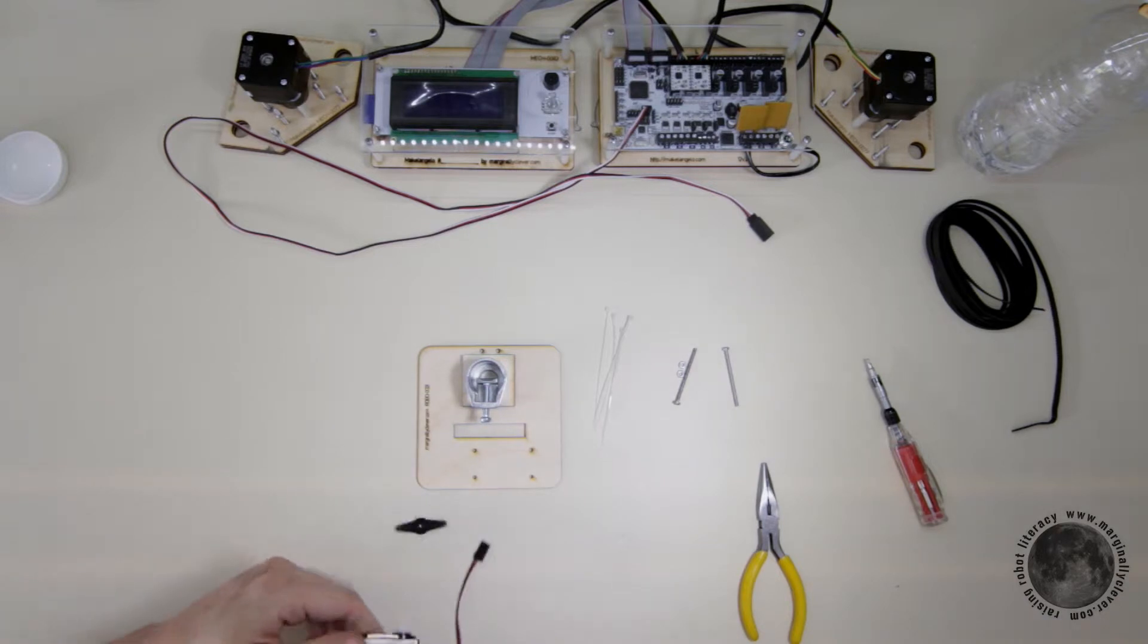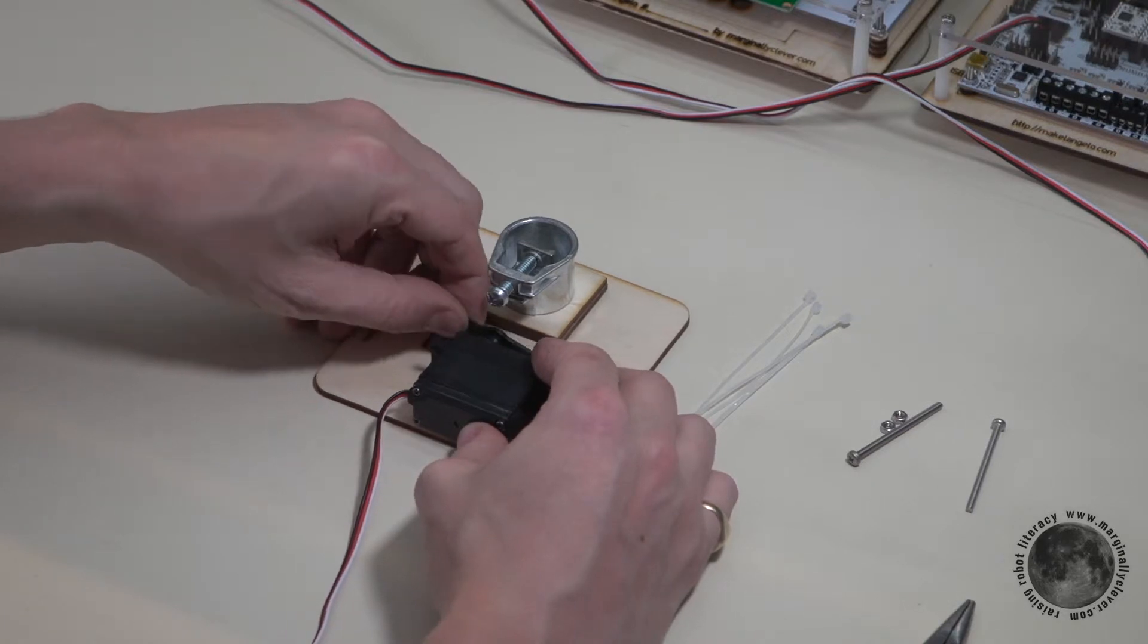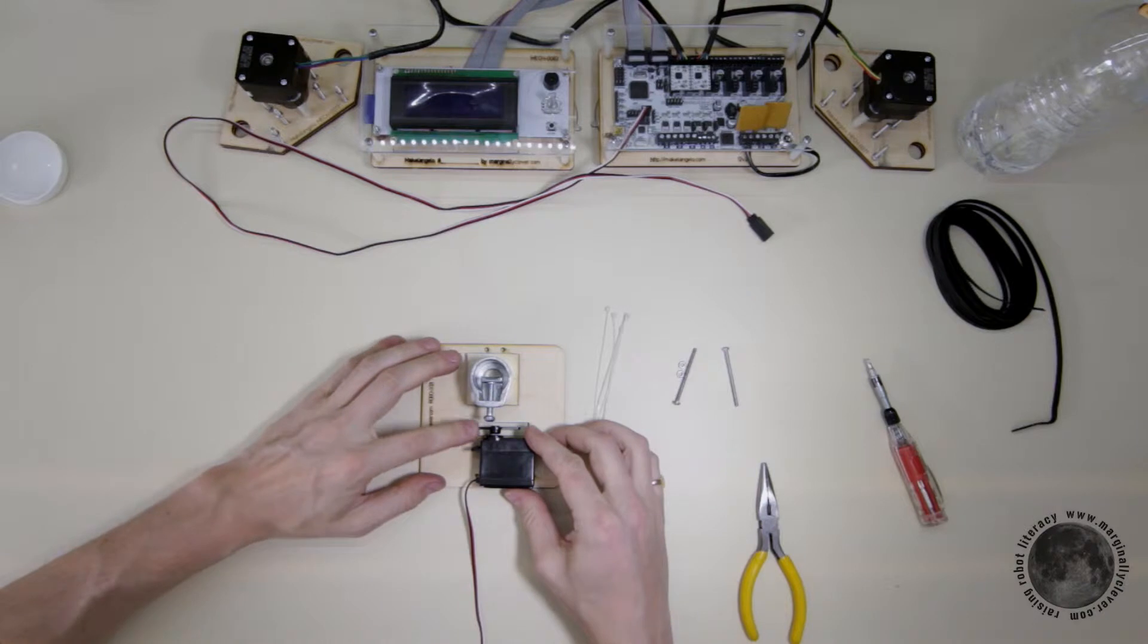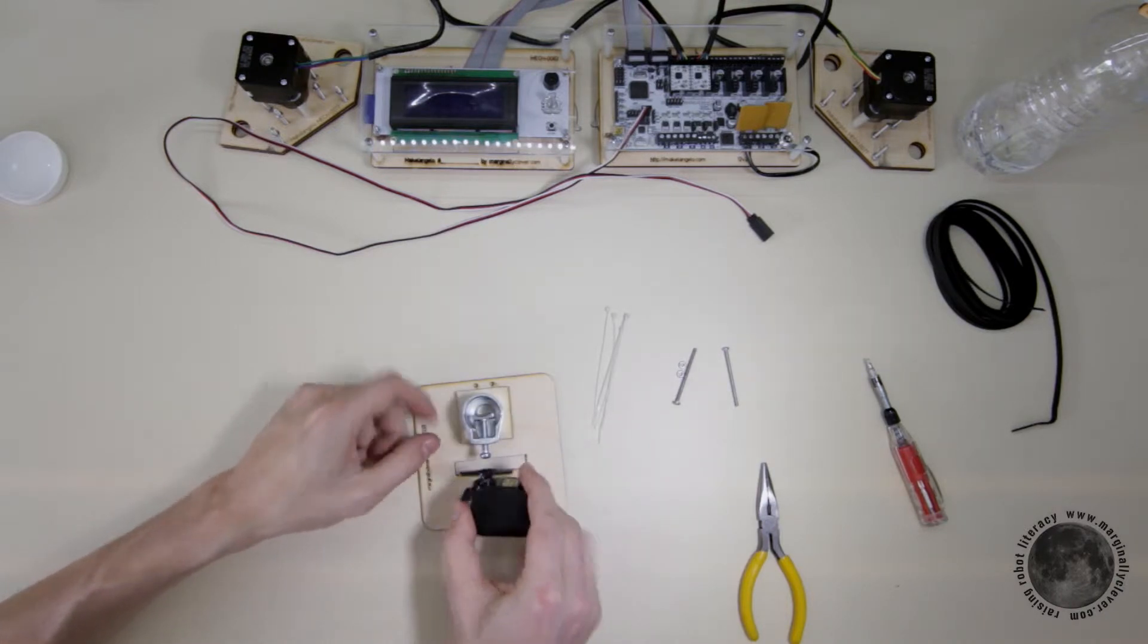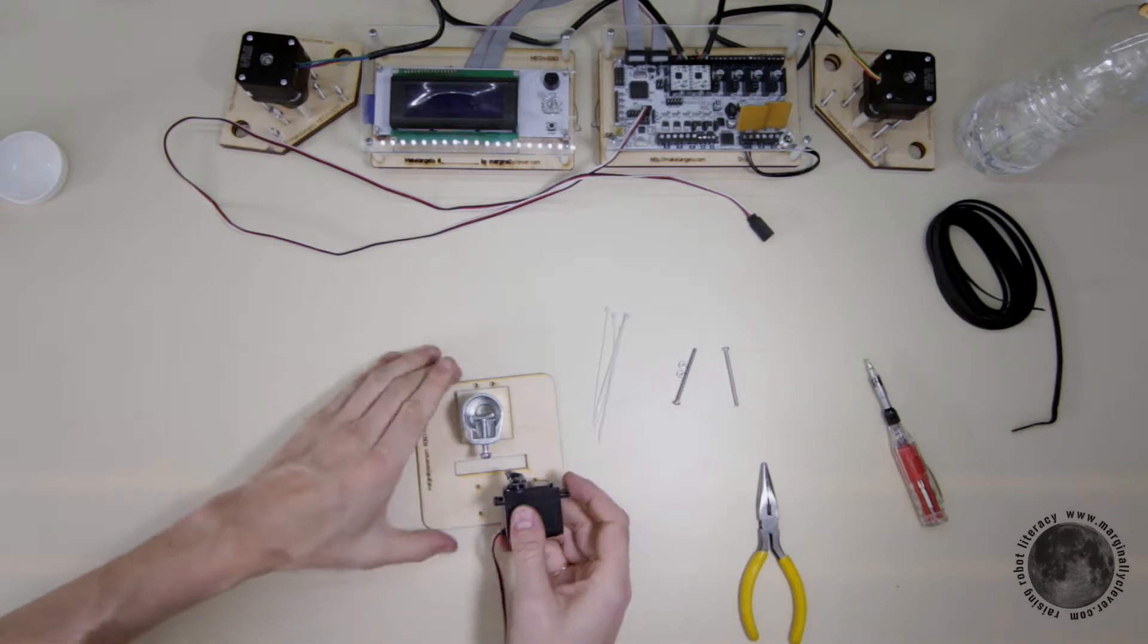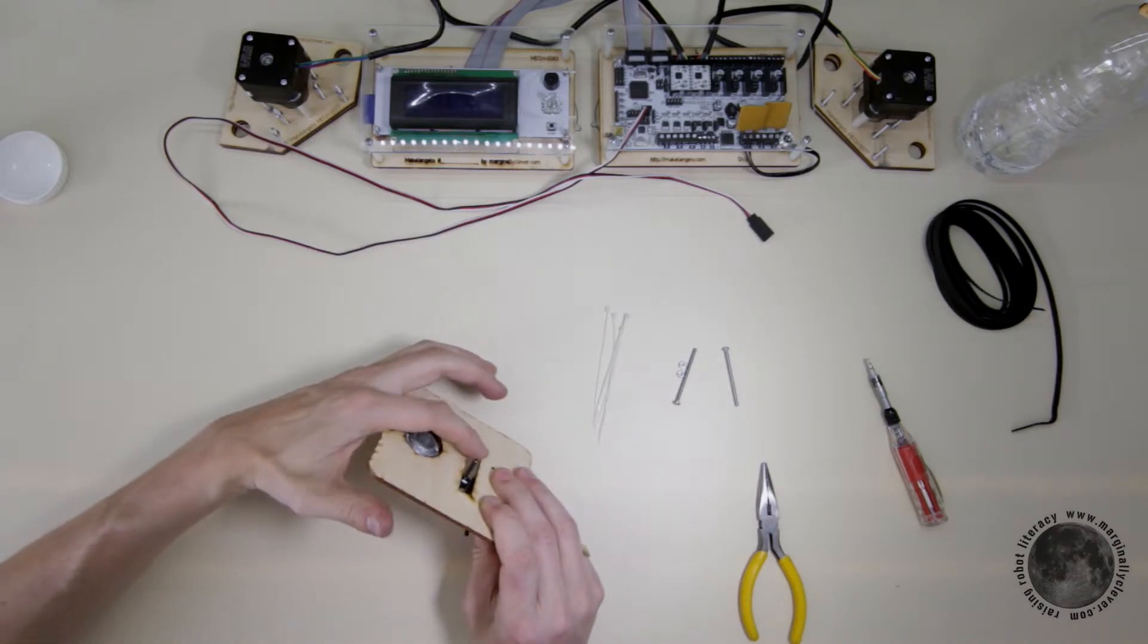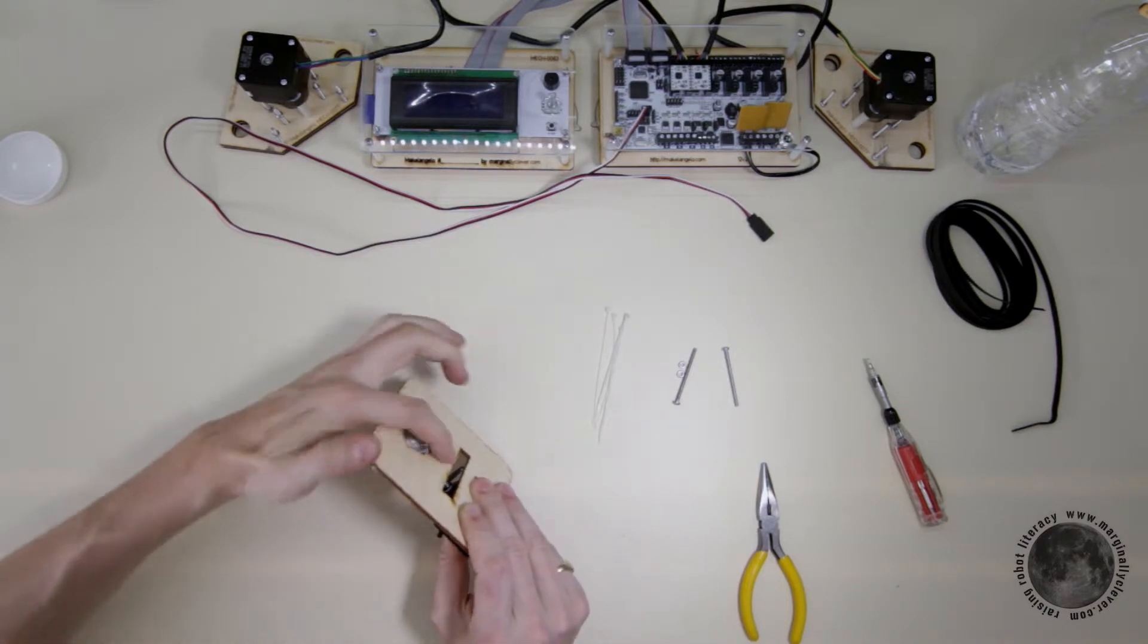This servo will mount like so. This will mount like so. And when the servo turns, this finger will move through the wood. And that makes the difference between lifting the pen and lowering the pen.